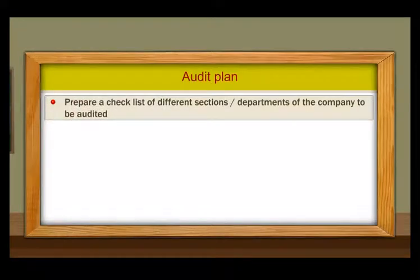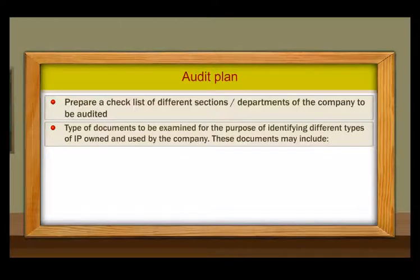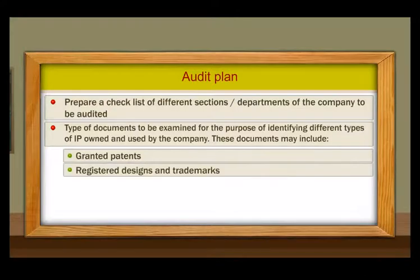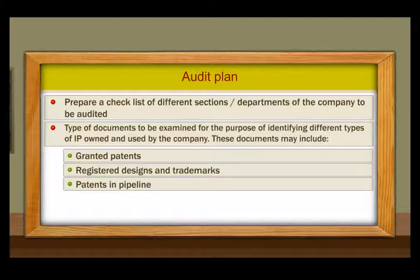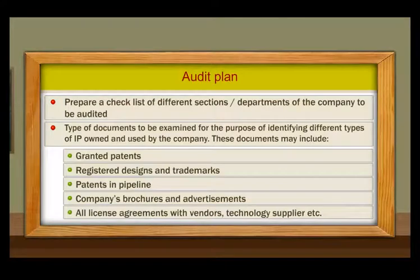Prepare a checklist of different sections or departments of the company to be audited. Type of documents to be examined for the purpose of identifying different types of IP owned and used by the company. These documents may include granted patents, registered designs and trademarks, patents in pipeline, company brochures and advertisements, and all license agreements with vendors, technology suppliers, etc.